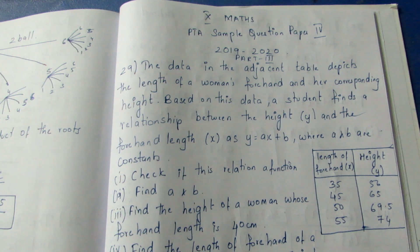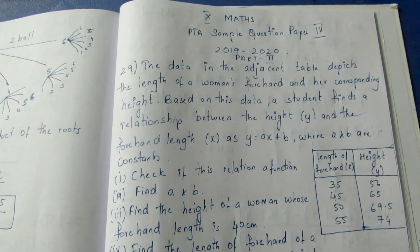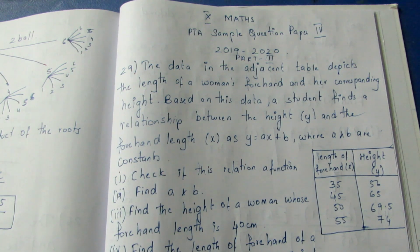The data in the adjacent table depicts the length of a woman's forehand and the corresponding height. Based on this data, a student finds a relation between the height y and the forehand length x, and the formula is y = ax + b, where a and b are variable constants.